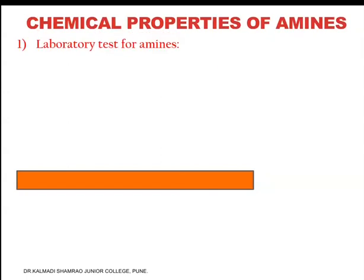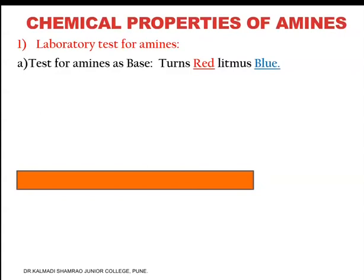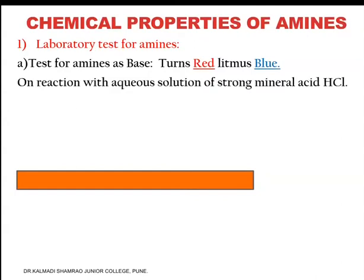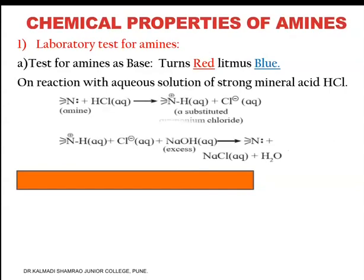The test for amines as a base will be done with litmus paper — it will turn red litmus blue, and blue litmus will remain as it is. On reaction with aqueous solution of strong mineral acid HCl, it will give a substituted ammonium chloride, which on reacting with excess of NaOH will give the amine back along with NaCl and H2O.